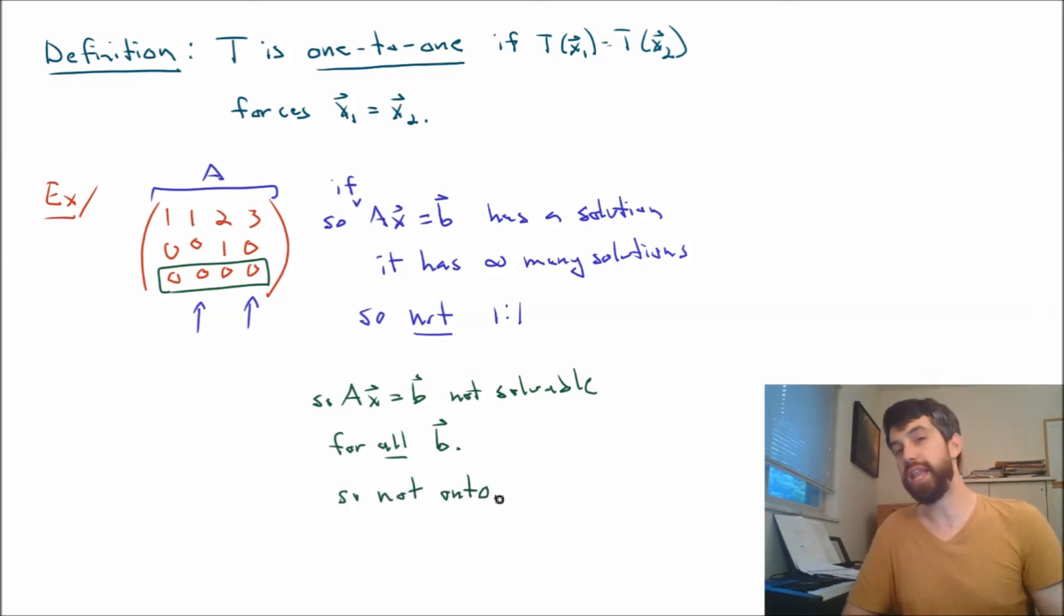This matrix that I have is an example of a transformation that turns out to be neither one-to-one nor onto.